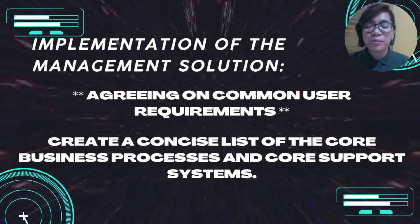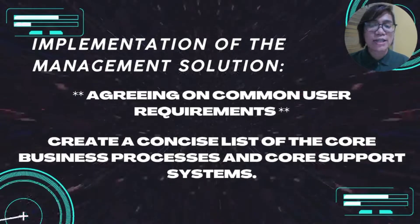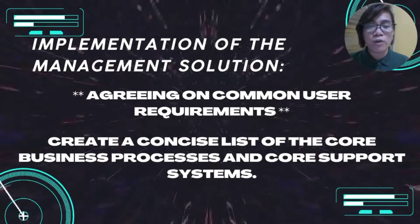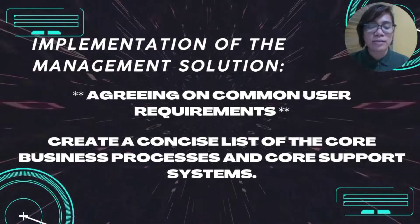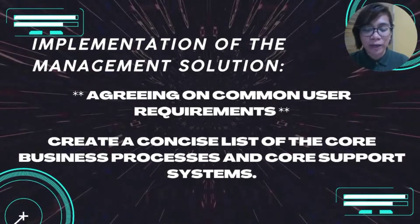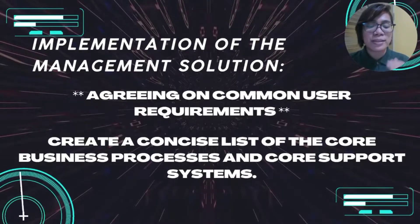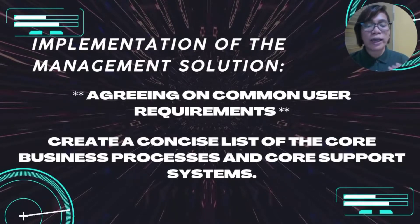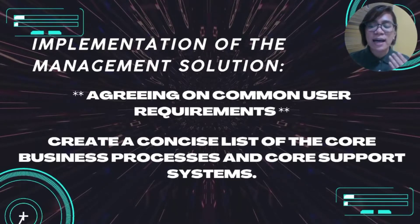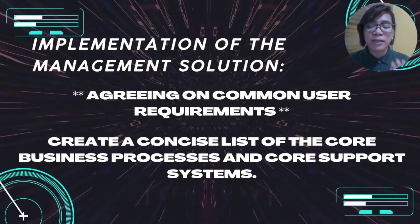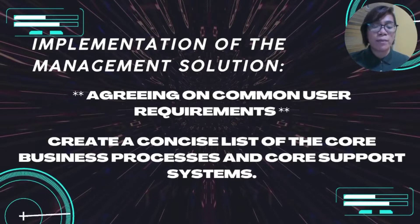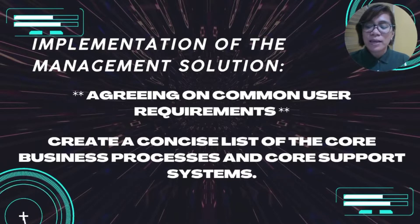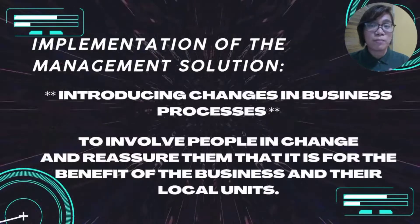Let's proceed to the implementation of the management solution to those challenges in developing global systems. On the issue of agreeing on common user requirements, a rational comparison process between the numerous divisions of the company will be sparked by creating a concise list of the core business processes and core support systems. This process will also help to create a common language for discussing the business and will inevitably result in an understanding of common elements, as well as the distinctive qualities that must remain local.